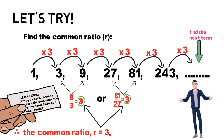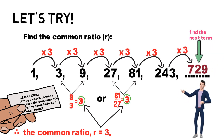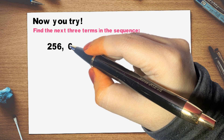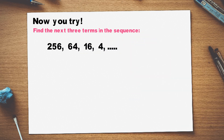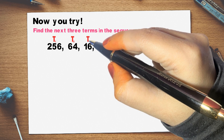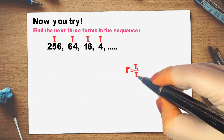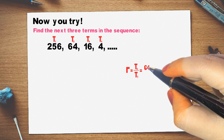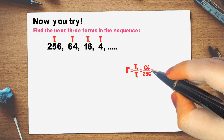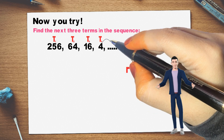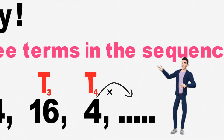Look for a pattern — usually a procedure or rule that uses the same number or expression each time to find the next term. The common ratio is 3. So we multiply by 1 over 4 to find the next 3 terms.